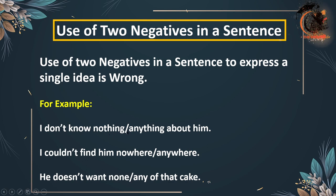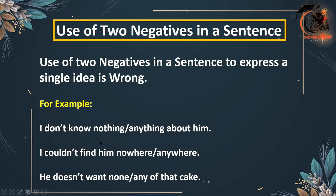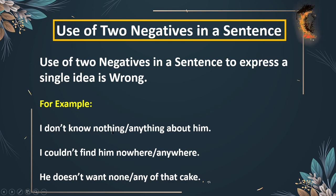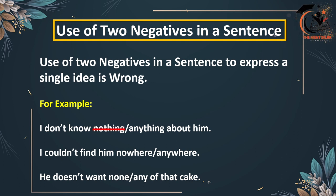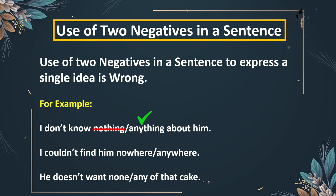For example, the first sentence is: 'I don't know nothing or anything about him.' We cannot use 'nothing' here because there already exists a negative in the sentence, which is 'don't.' So we cannot use another negative in the same sentence. The correct sentence becomes: 'I don't know anything about him.'